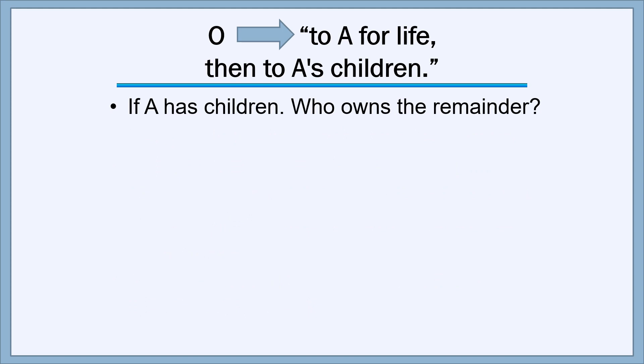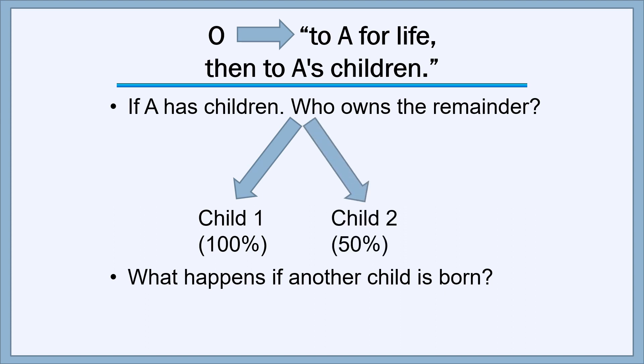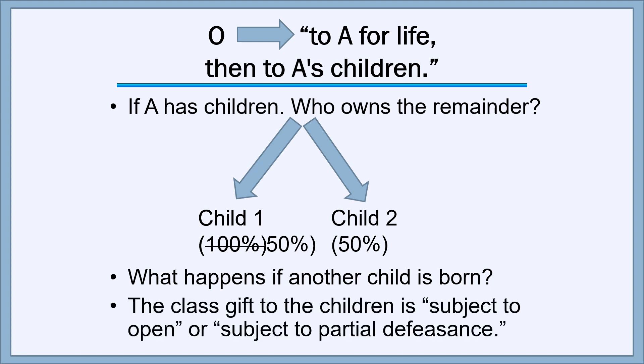Here's a graphical representation of that principle. The gift is to A for life and then to A's children. If A has one child, that child holds a 100% interest in the remainder. But when another child is born, child two takes a 50% interest in the remainder, and child one's interest is cut back from 100% to 50%. This phenomenon is called a remainder subject to open, or subject to partial defeasance — each owner is subject to having their interest reduced in fractional size as additional children are born.